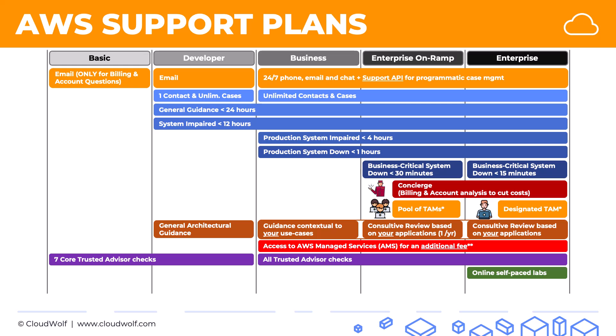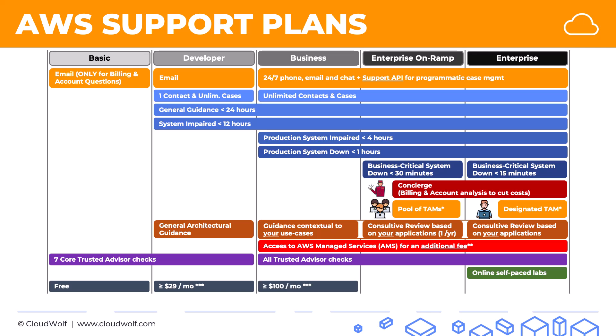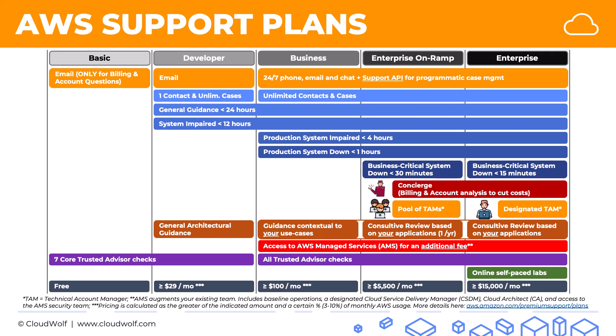In the enterprise plan, you also get online self-paced labs for learning. Regarding pricing: the basic plan is free. The developer plan is at least $29 a month — meaning you pay the greater of $29 or roughly 10% of your monthly AWS usage. Business is minimum $100 a month. Enterprise on ramp is $5,500 a month, and enterprise is $15,000 a month, or a percentage of monthly usage ranging between 3% and 10%. Please check the linked pricing page, as these amounts and percentages can change over time.